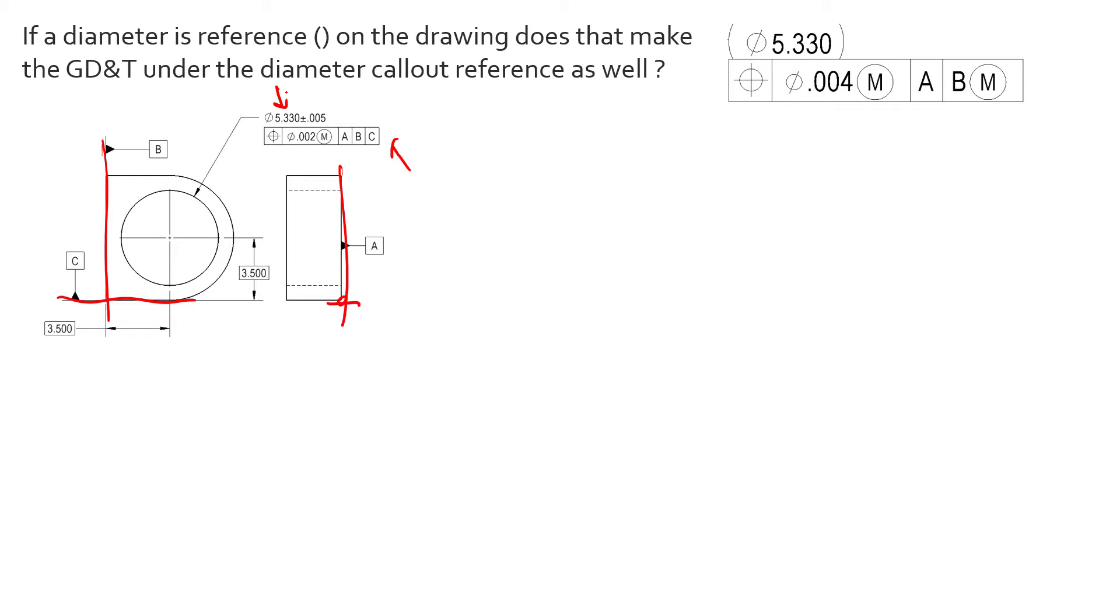Those of you that know Rule Number One for GD&T know that size also controls the form. So we're controlling size and form with this size dimension here, and we're controlling the location and orientation with this position callout. We've fully defined—size, location, orientation, and form—all four elements that any feature, surface, or feature of size needs to have locked down in order to be fully constrained.